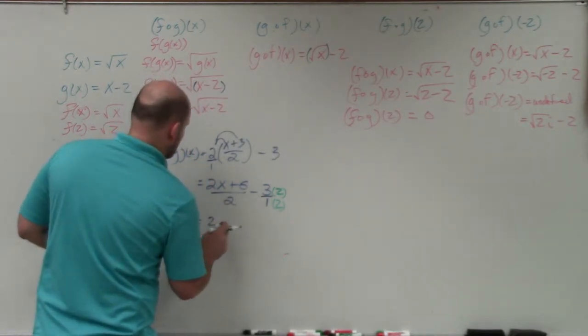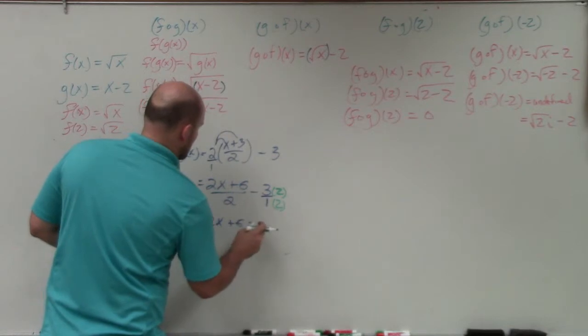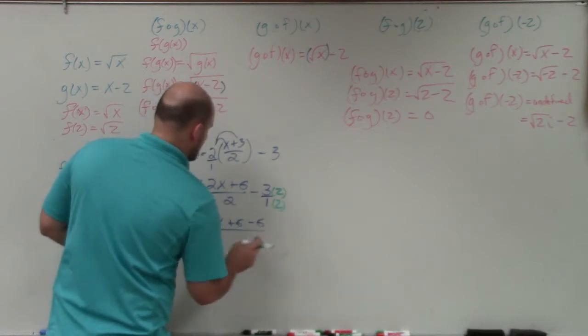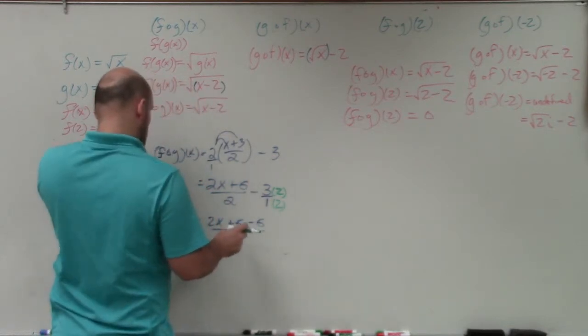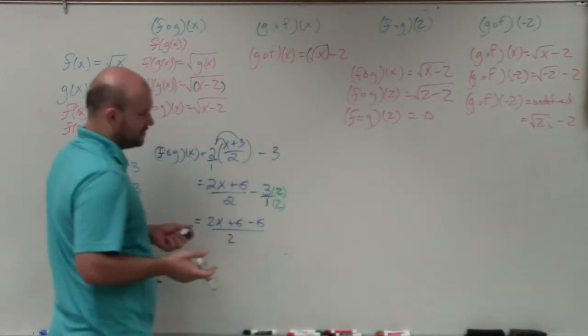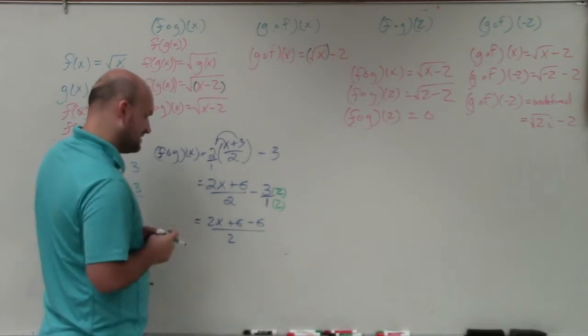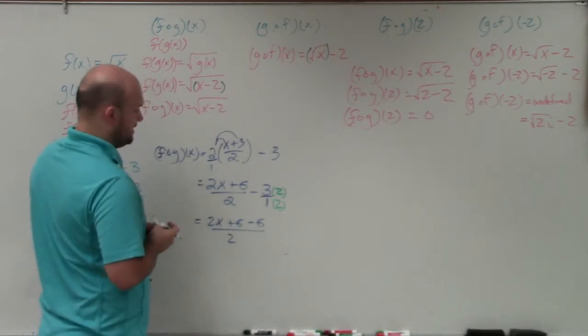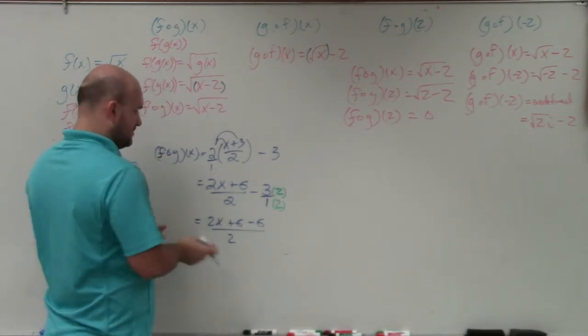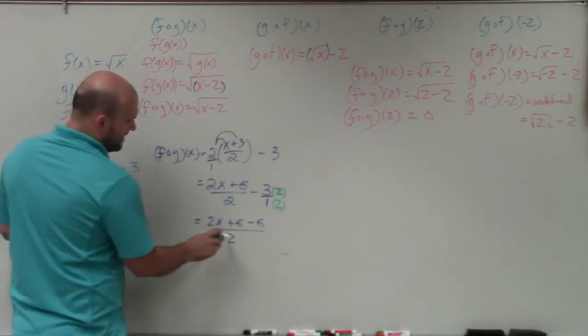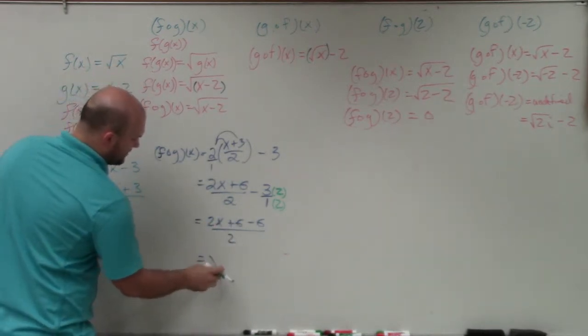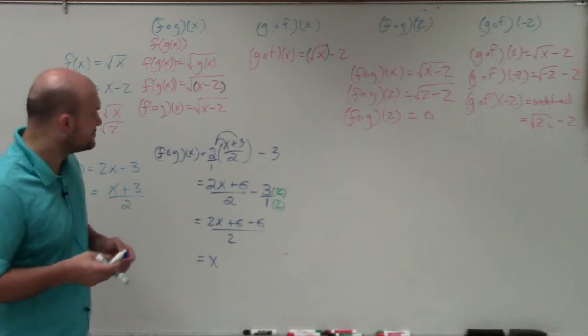So therefore, I now have 2x plus 6 minus 6 divided by 2, because that's basically your common term. And then 6 minus 6 is just going to be 0. So therefore, I have 2x divided by 2, which is just going to leave me with x. So it works out fairly well.